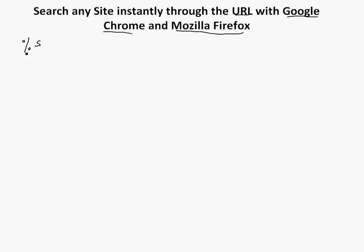Percent S — that's the percent symbol and then the letter S — is a search variable that the browser has in its code. Whenever you're searching something, that's what it replaces: this variable inside the code. But you don't need to know much more than that. Let me just show you how to do it with Firefox.